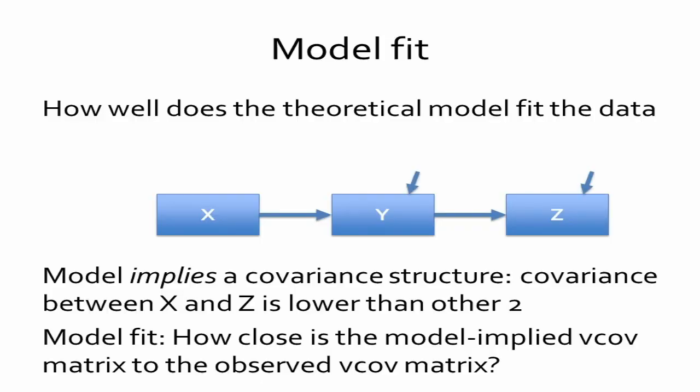Using this logic we can define model fit: how well does the theoretical model fit the data? In a simple mediation model where X predicts Y and Y predicts Z, with no direct X-to-Z effect, the model implies the covariance between X and Z will be smaller than the other covariances — obtained by multiplying the X-Y and Y-Z covariances. This model has fewer parameters than it could have, and model fit addresses how close the model-implied covariance matrix is to the observed covariance matrix.